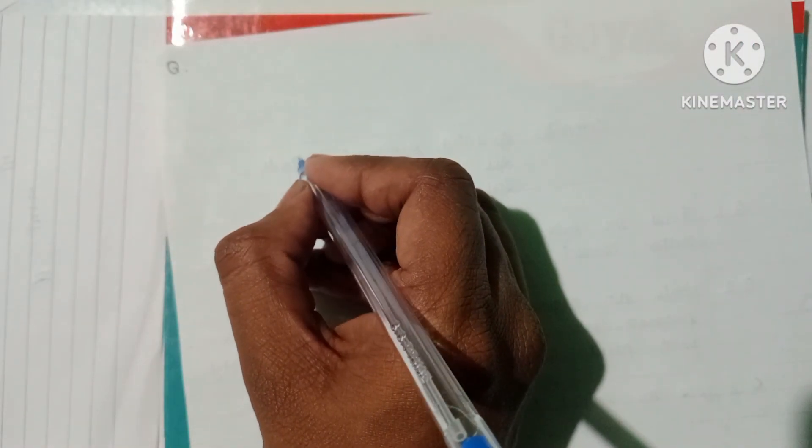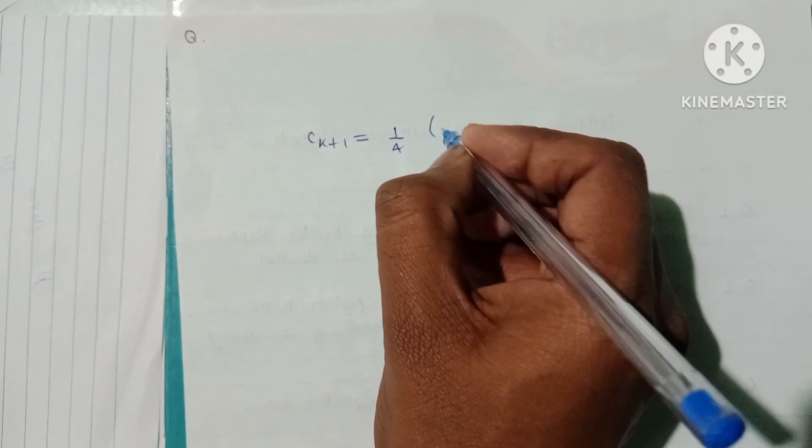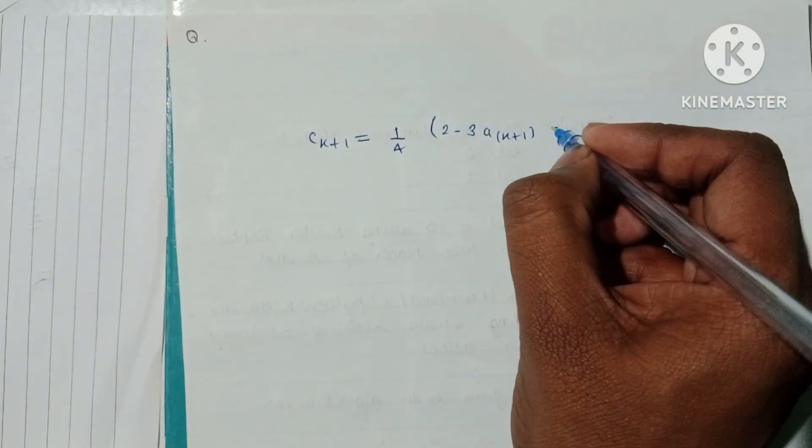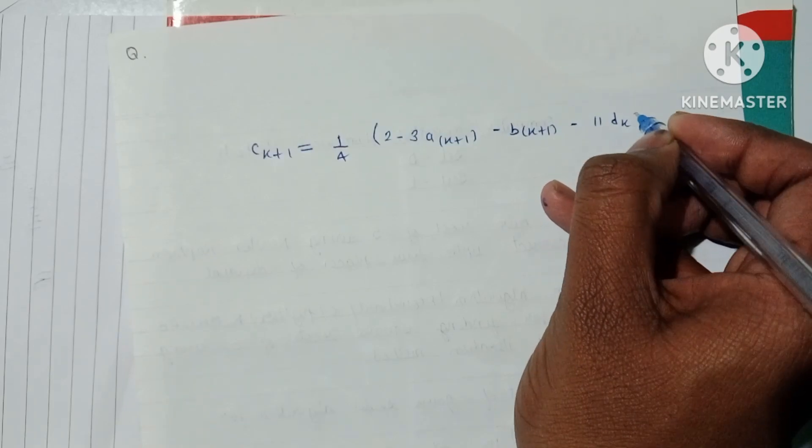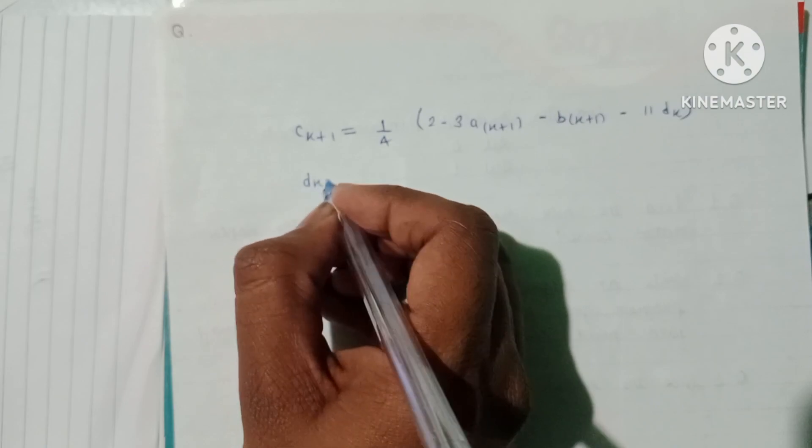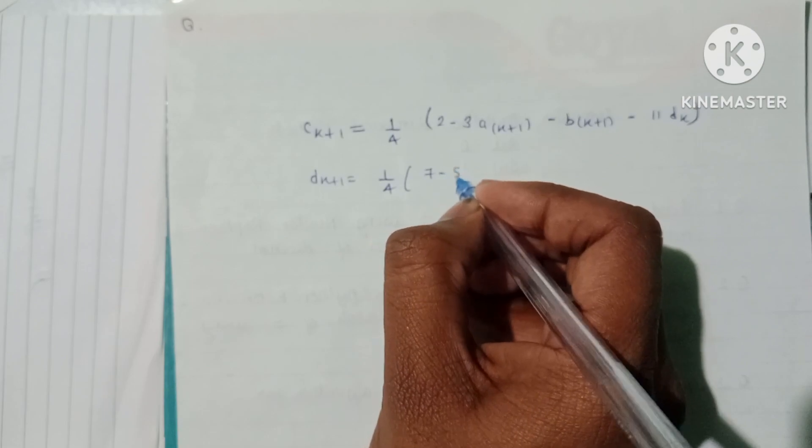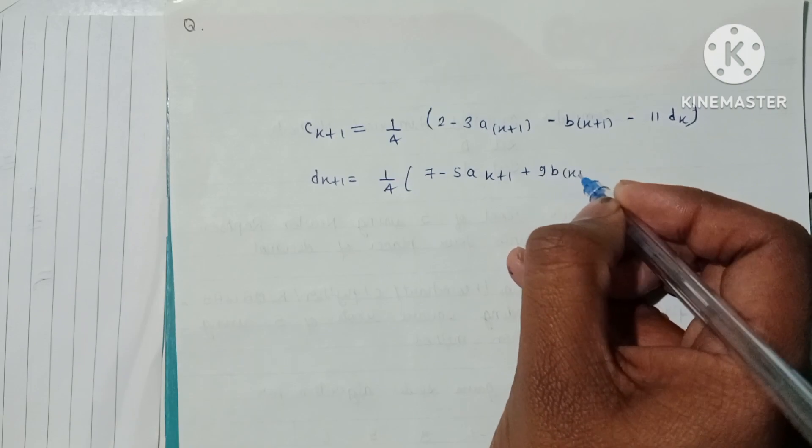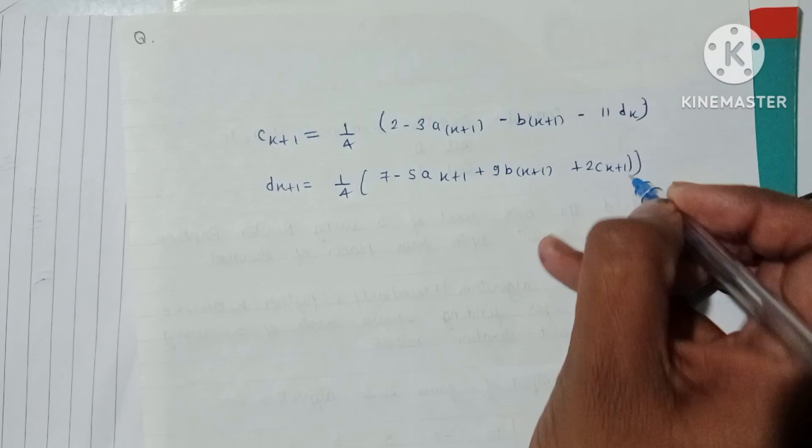Now C(k+1) equals 1/4 times (2 - 3A(k+1) - B(k+1) - 11D(k)). Then D(k+1) equals 1/4 times (7 - 5A(k+1) + 9B(k+1) + 2C(k+1)). Here we use k+1 because B's value will already be calculated, so we use the current value, not the previous value.